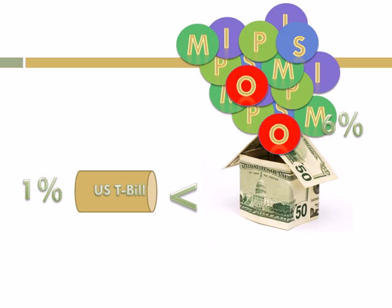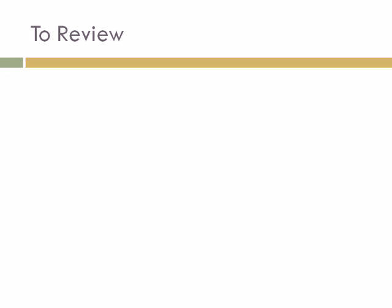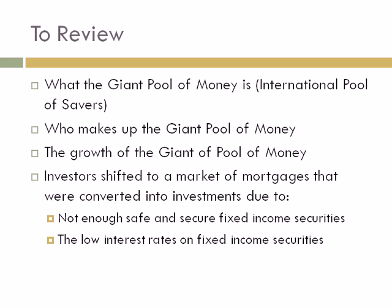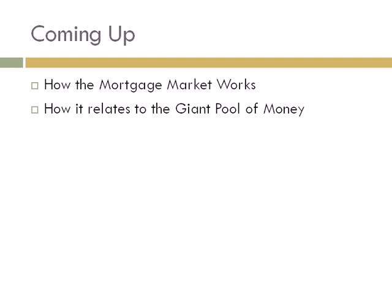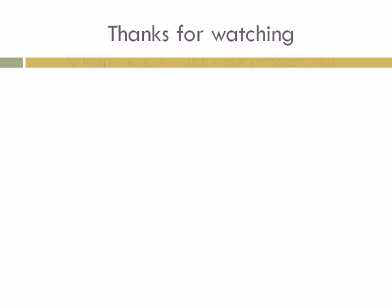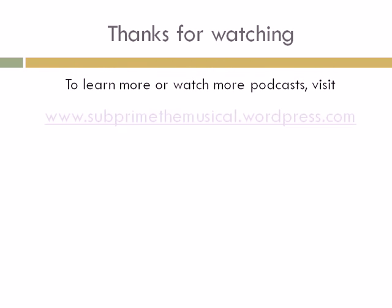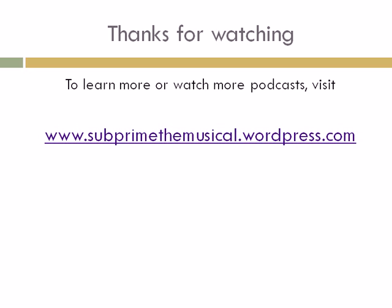But how exactly do you turn a house into an investment product? I'll be explaining that in my upcoming podcast, "How Mortgages Work." To review, we learned what the giant pool of money is, who makes it up, how it grew in size, and how investors shifted to a market of mortgages that were converted into investments due to the fact that there were not enough safe and secure fixed income securities, and that these fixed income securities had low interest rates. Coming up, we will learn how the mortgage market works and how it relates to the giant pool of money. Thanks for watching. To learn more or watch more podcasts, visit www.subprimethemusical.wordpress.com.